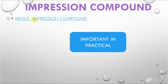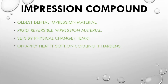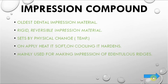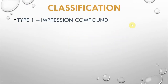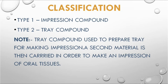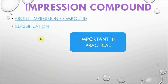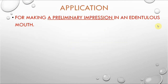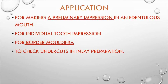Impression compound is important in the practical exam. It is the oldest dental impression material — rigid and reversible as it sets by physical change: soft on heating and hard on cooling. It is mainly used for primary impression of edentulous ridges. Classified as Type 1 (impression compound) and Type 2 (tray compound). Tray compound is used to prepare trays for making impressions. Supplied as cake and sticks.